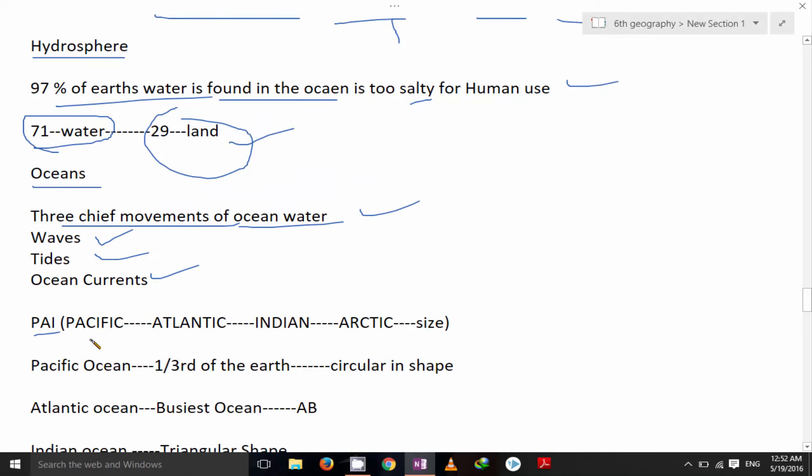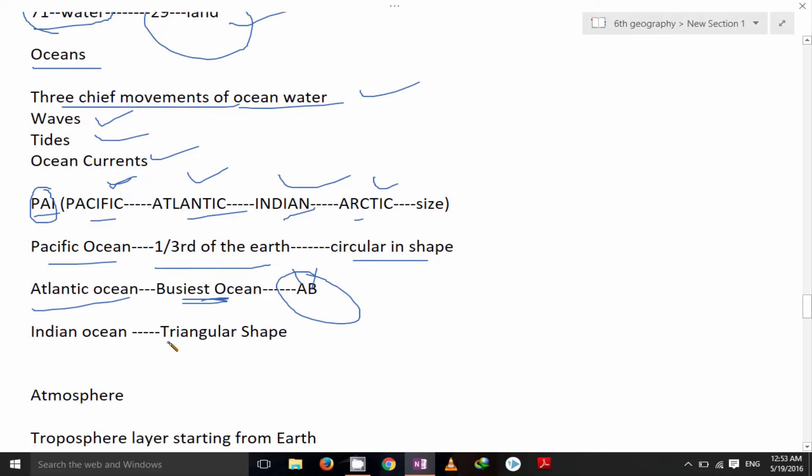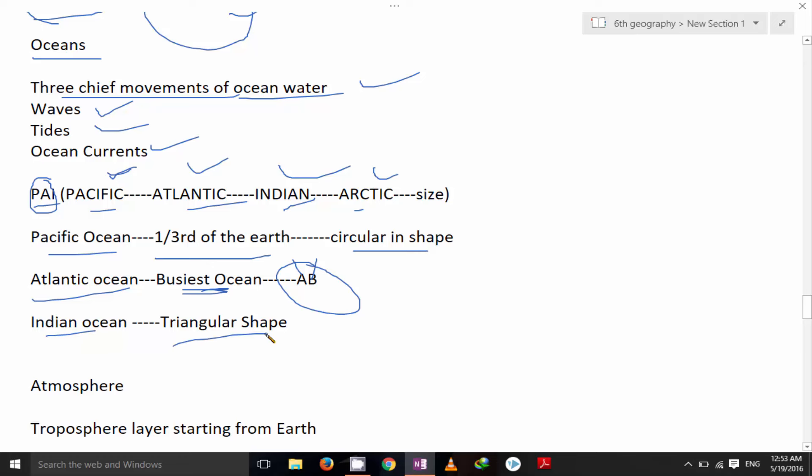Consider Pi. That is Pacific, Atlantic, India and then Arctic. Pacific is the biggest ocean. Then Atlantic, then Indian, then Arctic ocean. Pacific ocean, one third of the earth, circular in shape. Atlantic ocean, it is the busiest ocean. So AB, that is Atlantic ocean, busiest ocean. Indian ocean is triangular in shape.